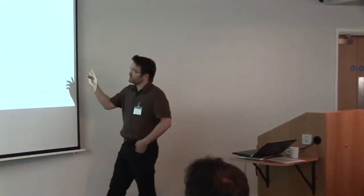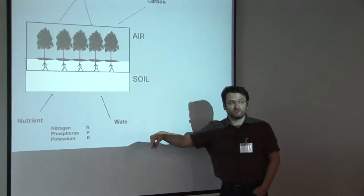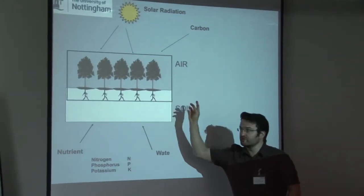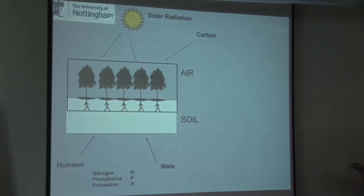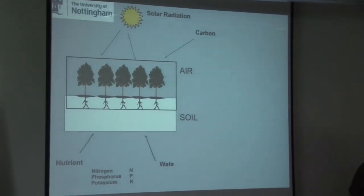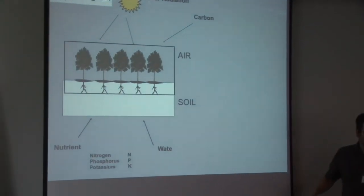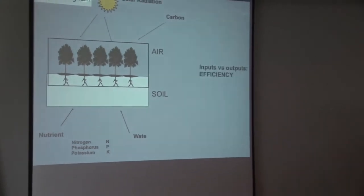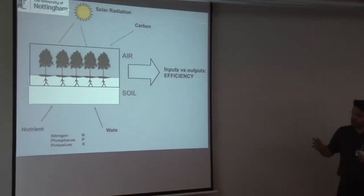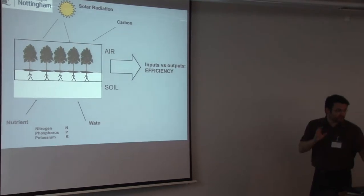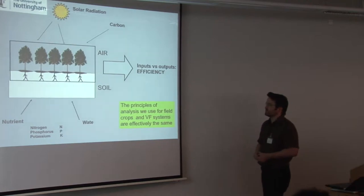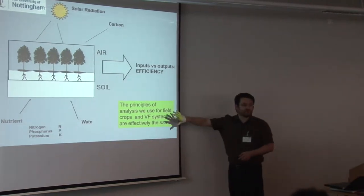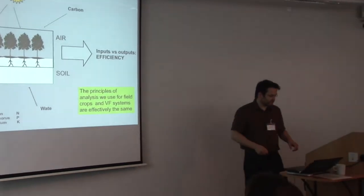So we consider a crop system, rightly or wrongly, but certainly usefully, as a closed system. So we input radiation, we input CO2, we input nutrients, we input water, and we get an output. And we can measure efficiency in the same way you would do in a closed system like a vertical farming system. The principles we use are effectively the same, so we can talk the same language.